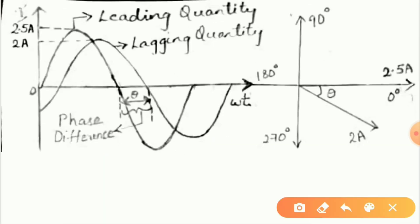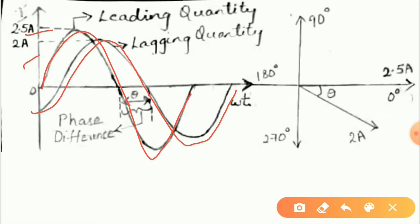Let us consider two alternating quantities as shown here: one is a leading quantity with a current of 2.5A, while another alternating quantity has a current of 2A and is a lagging quantity. The phase difference between the two quantities is of angle theta.